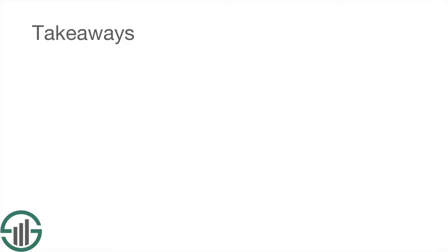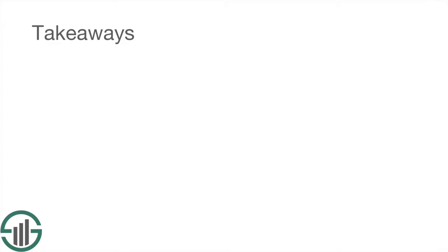There are really three main lessons that you should take away from this video. The first is the difference between adjusted earnings and reported earnings. Adjusted earnings exclude non-recurring accounting items that impact earnings in some way. Adjusted earnings give a far more accurate depiction of the company's future earnings power, and that's why we use them in all of our analysis.